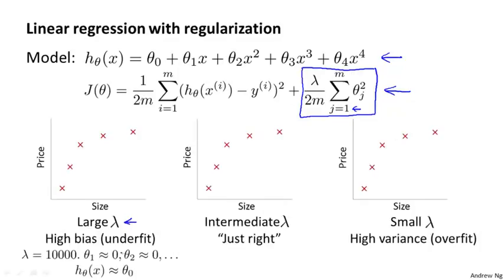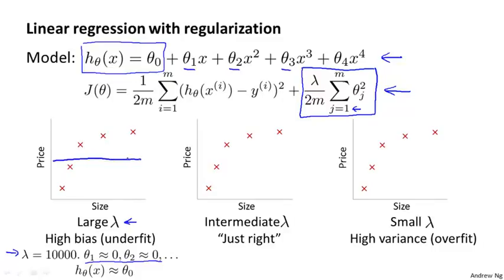The first is the case of a very large value of the regularization parameter lambda, such as if lambda were equal to 10,000 — some huge value. In this case, all of these parameters, theta 1, theta 2, theta 3, and so on, will be heavily penalized, and we'll end up with most of these parameter values being close to 0. The hypothesis will be roughly h of x approximately equal to theta 0, more or less a flat constant straight line. So this hypothesis has high bias and it badly underfits this data set.